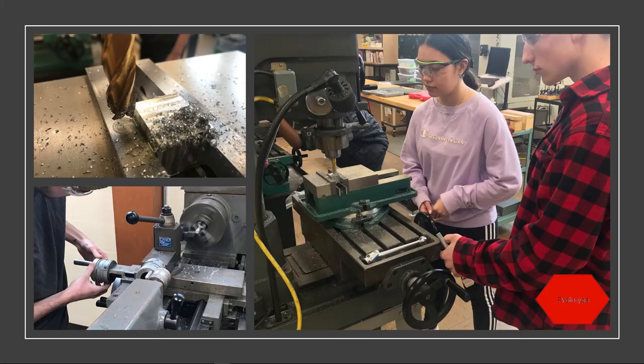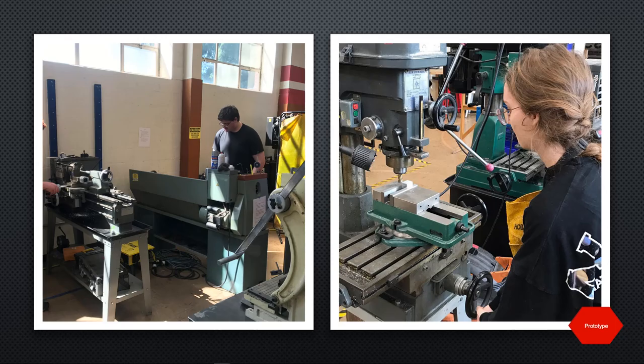Once students land on a design that meets all the requirements of the client, they move to physical fabrication. As a construction material, aluminum is relatively inexpensive, so I have every student fabricate their own product. Tools that we use include mills, lathes, drill presses, taps, and dies. These are tools that are commonly found in any high school metal shop.